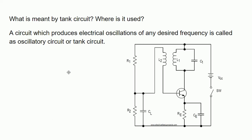The circuit you are seeing is called a tuned oscillator, and the parallel combination of L1 and C1 — the capacitor and inductor — is called the tank circuit. The tank circuit is not a standalone circuit; it is part of the oscillator circuit, just as a filter circuit is part of a power supply circuit. The tank circuit is simply the parallel combination of a capacitor and an inductor which produces continuous oscillations.